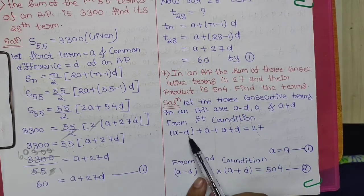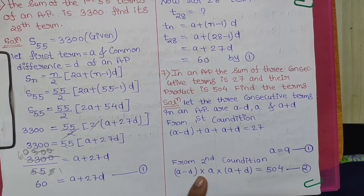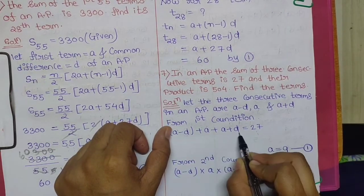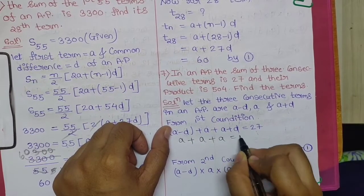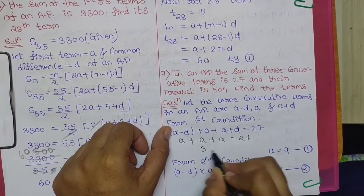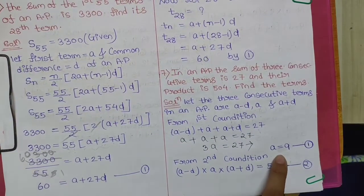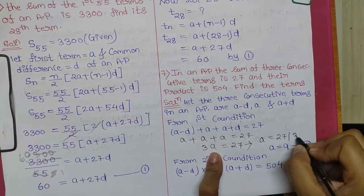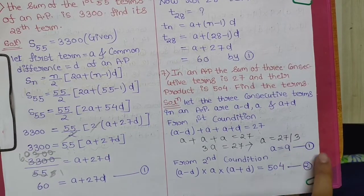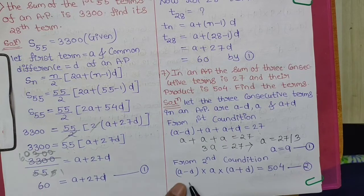From the first condition, (A − D) + A + (A + D) = 27. The −D and +D cancel, giving 3A = 27, so A = 27/3 = 9. This is Equation 1.